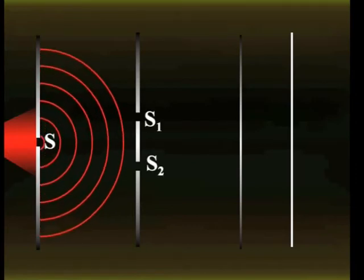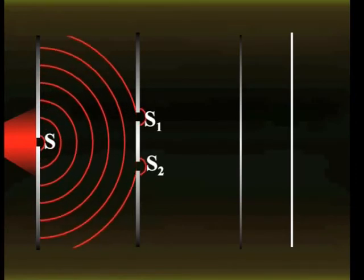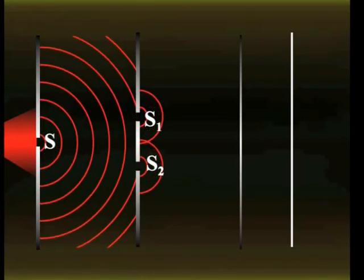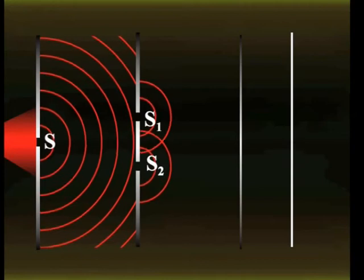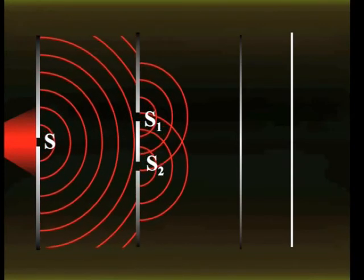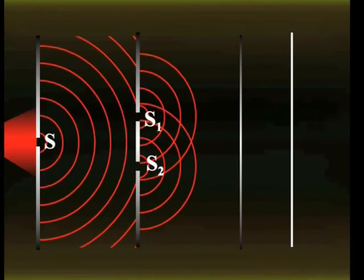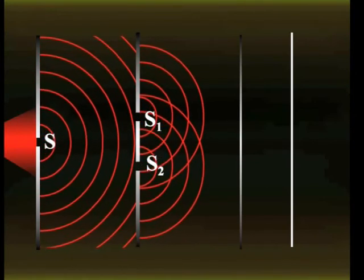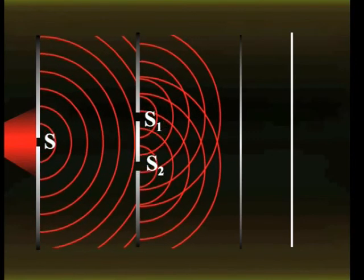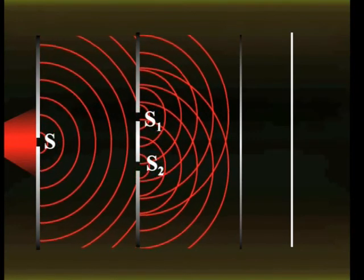These wavefronts reach the slits S1 and S2 simultaneously, which in turn become sources of secondary wavelets. Since the waves emerging from slits S1 and S2 originate from the same source S, they are in phase, or S1 and S2 act as two coherent sources.